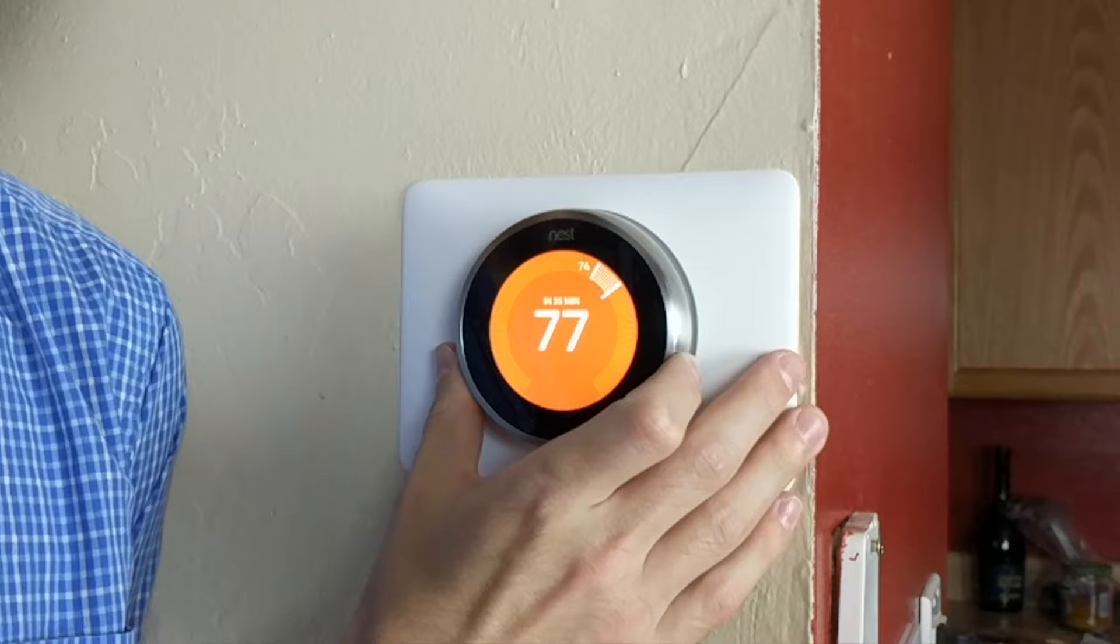Now the most basic function of the Nest Learning Thermostat is controlling the temperature, and thankfully it's super easy to do from either the device itself or from the app. First up is the device. You probably have the device set to either the heater or the air conditioner, and if that's the case, all you have to do is approach the thermostat and turn the ring around it to your desired temperature.